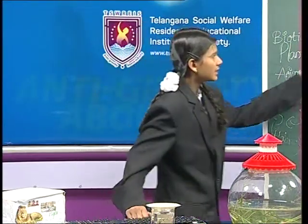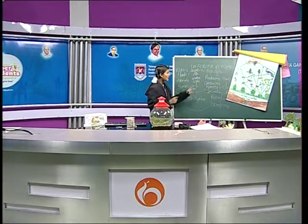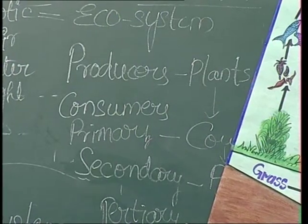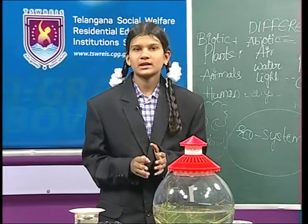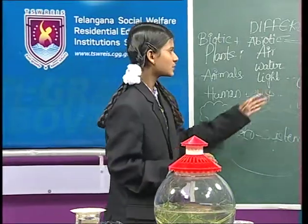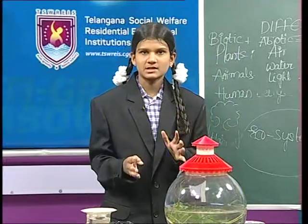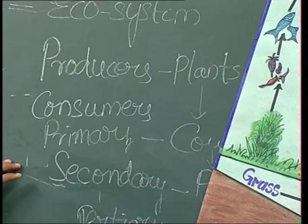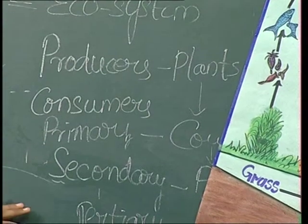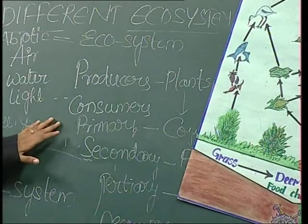What is meant by producers, decomposers, and consumers? Producers means plants are called producers — plants like neem, mango, coconut, dates, etc. All plants are called producers. Consumers are organisms that depend on other organisms. There are three types of consumers: primary, secondary, and tertiary. Primary consumers are herbivores; they depend on plants for food.